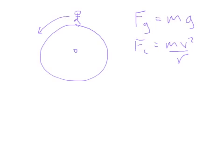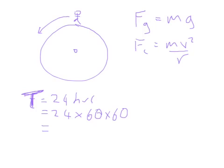So the Earth completes one revolution in a time of 24 hours, which is 24 times - in fact we should call this capital T because it's one period - 24 times 60 minutes times 60 seconds to give us the time in seconds.